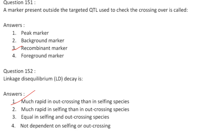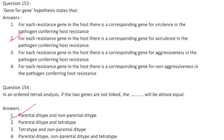A marker present outside the targeted QTL used to check crossing over is called a recombinant marker. Linkage disequilibrium decay is much more rapid in outcrossing than in selfing species. Answer is option 1. The gene-for-gene hypothesis states that for each resistance gene in the host there is a corresponding gene for avirulence in the pathogen conferring host resistance.